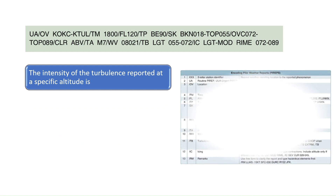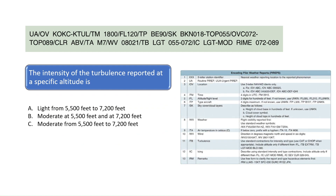The intensity of the turbulence reported at a specific altitude is — as you can see from the chart on the right, found in Chapter 13 of the Pilot's Handbook of Aeronautical Knowledge, the abbreviation TB stands for turbulence. The PIREP is reporting light turbulence from 5,500 to 7,200 feet. The letters LGT stand for light, and the altitudes are indicated in hundreds of feet, so add two zeros to the numbers 55 and 72 to get the altitude range at which the turbulence was reported. The correct answer is A.